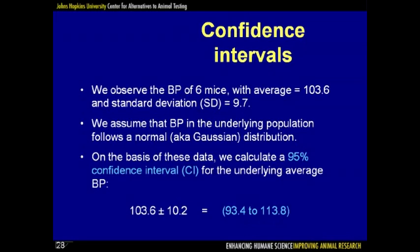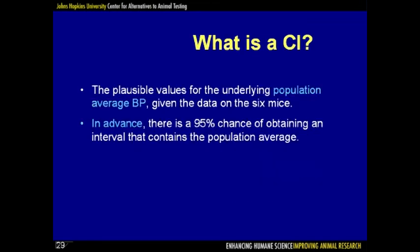The first important statistical object is the confidence interval. Suppose we observe six mice with an average blood pressure of 103.6 and a standard deviation of 9.7. Assuming the underlying population follows a normal distribution, we calculate a 95% confidence interval for the underlying average blood pressure as the interval from 93.4 to 113.8. The best way to view this is as the set of plausible values for the underlying true average blood pressure. In advance, we had a 95% chance of obtaining an interval that contained the true average.